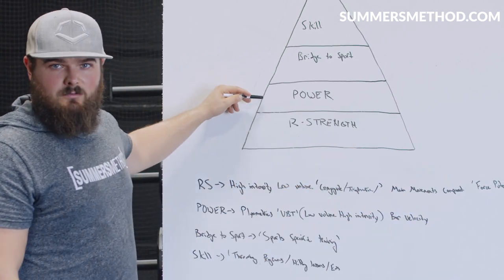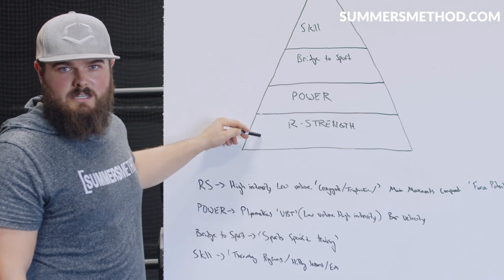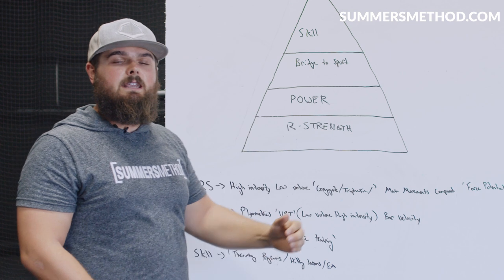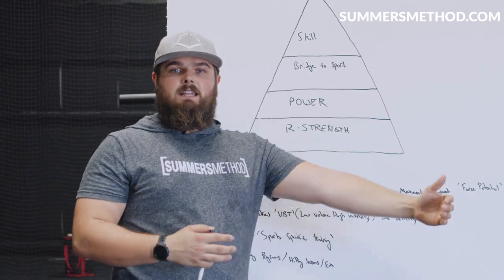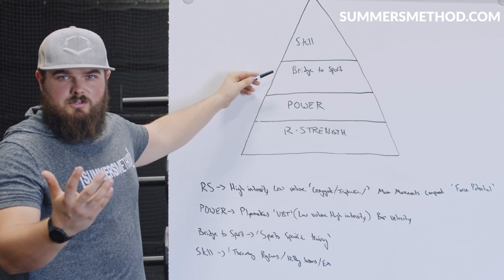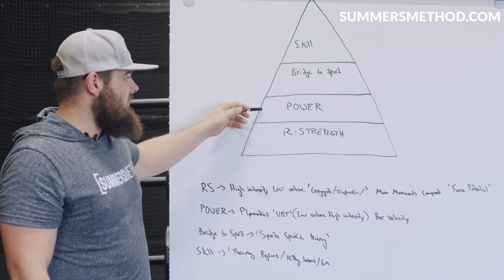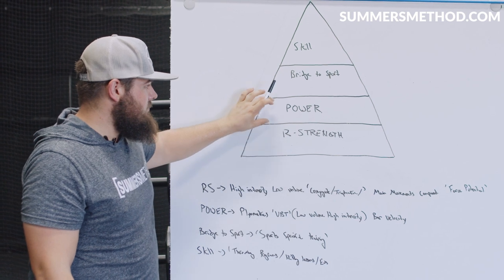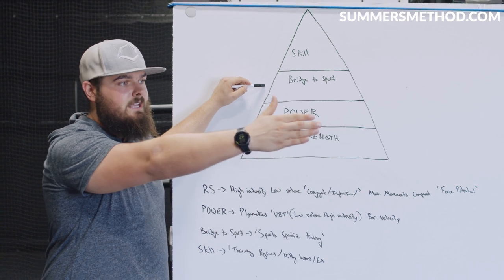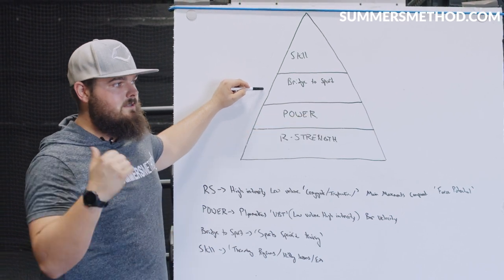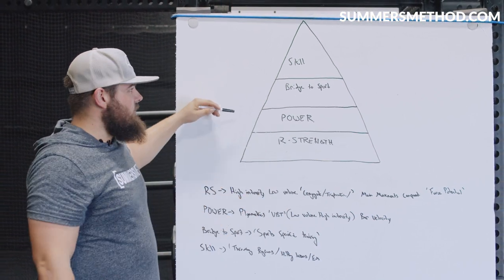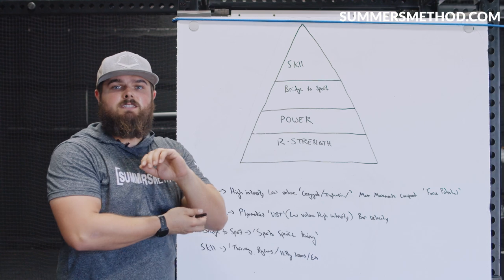If you try to hit power work before you build a base of relative strength, your ceiling is only so high. You're going to get better at first, but you're going to plateau and hit a ceiling. Same thing with our bridge to sport. If you're just doing your sports specific exercises before you've transferred your relative strength to power, you're only going to reach a certain level of adaptation. Sure, you'll hit med ball throws and maybe start hitting a ball half a mile an hour faster to a mile an hour faster, but you're never going to reach a higher ceiling. You need to bring your ceiling up.